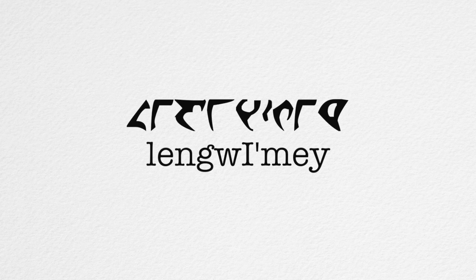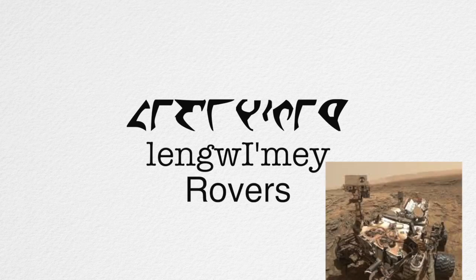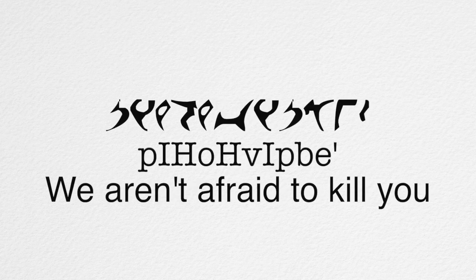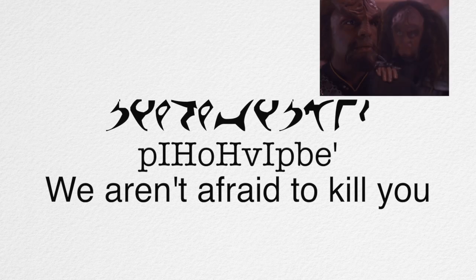Klingon also has a series of suffixes called 'Lengwitme,' or Rovers, which are suffixes with no set place in a word and can often go in different places depending on context. One great example is the suffix 'Khul,' which emphasizes whichever word or suffix came right before it. An example from the official Klingon dictionary is the sentence 'B'khokh-Vip-Bet,' for 'we are not afraid to kill you.' Yeah, Klingon — it's a charming bunch, am I right?